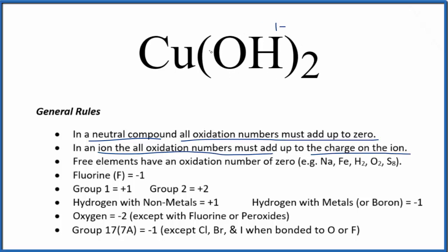Since we have two hydroxide ions, and each one is 1 minus, 2 times 1 minus, that's 2 minus, copper has to be plus 2. So the oxidation number on the copper is plus 2.